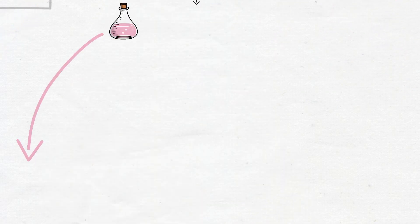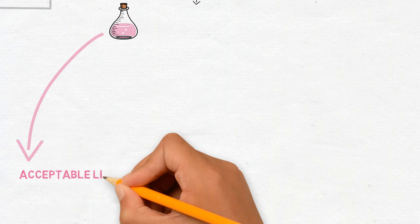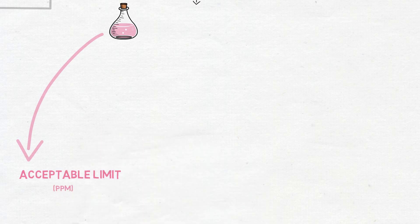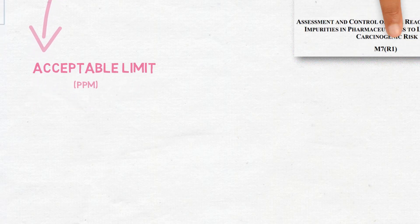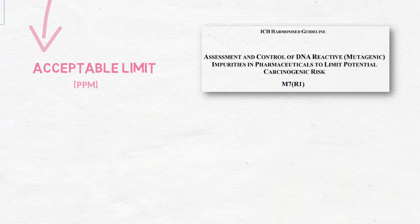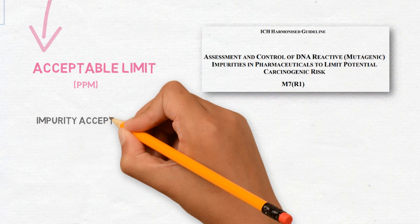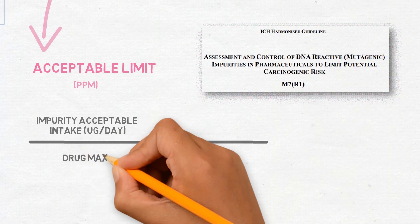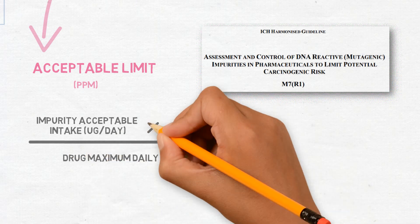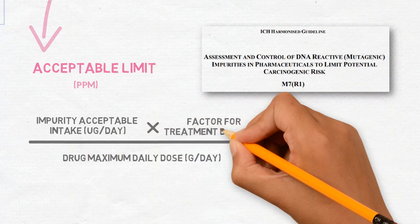The acceptable limit for the nitrosamine must be calculated based on the principles defined in ICH M7, the guideline which defines how to control mutagenic impurities in drug products. For this calculation, we must consider the acceptable intake of the impurity, the maximum daily dose of the drug and the treatment duration.